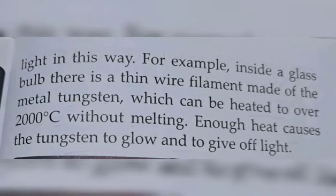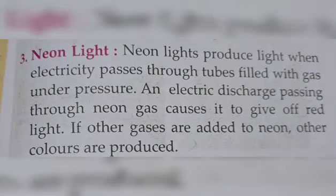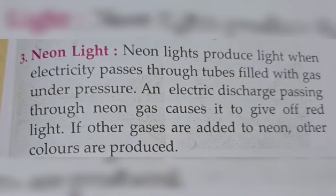The next type of light is neon light. Neon light produces light when electricity passes through tubes filled with gas under pressure. Neon lights ke andar jo tubes hoti hain, un tubes ke andar neon gas filled ki jati hai. Is gas ko tube ke andar kuch pressure mein rakha jata hai. An electric discharge passing through neon gas causes it to give off red light.